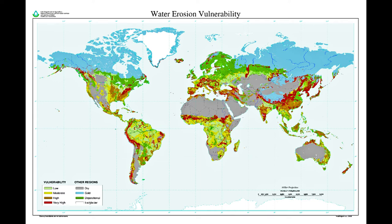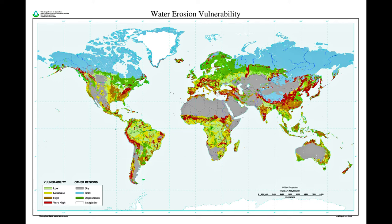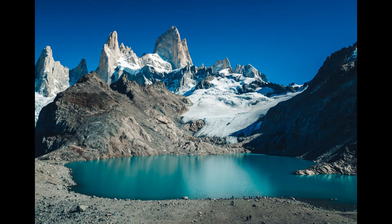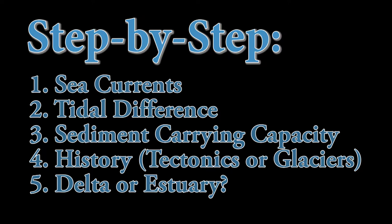Next, we look at the length and surface of the river — is the river able to carry a lot of sediment, and is the surface vulnerable to water erosion? This map shows the vulnerability of areas around the world, and you can use it to determine whether a lot of sediment is being deposited at your river's mouth. Near the river's delta, you should see a lot of sediment; if not, it probably is an estuary. Lastly, we look at the history of the river — could it be possible that the river's mouth was formed due to plate tectonics or a glacier? If you look at all your data together, you should see a logical explanation for why your river looks the way it does.